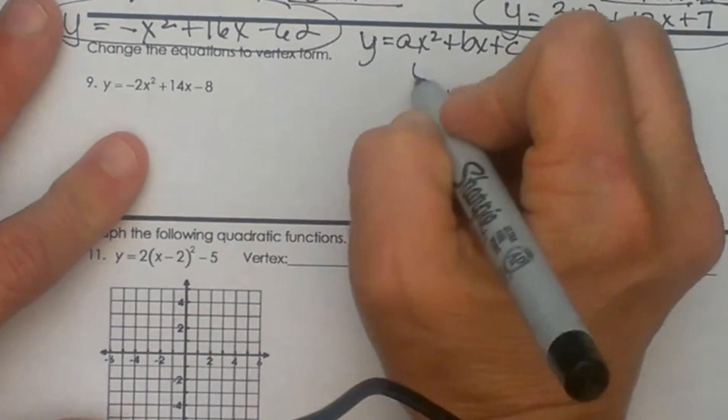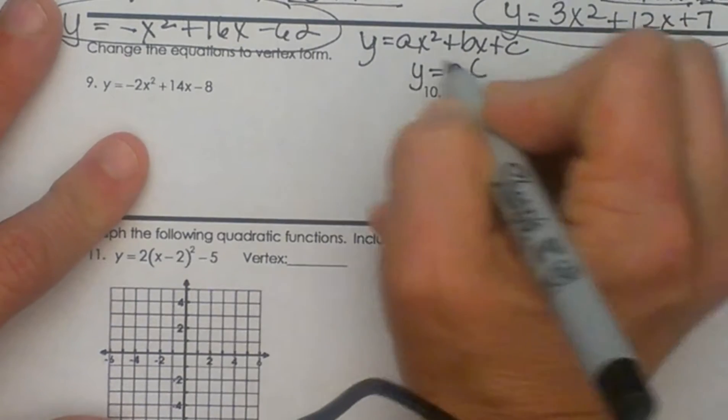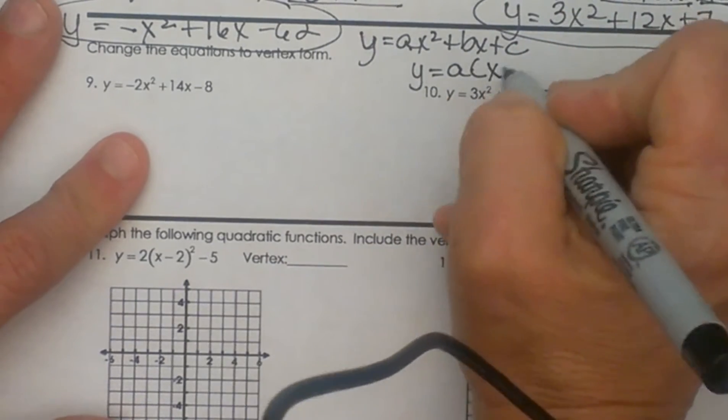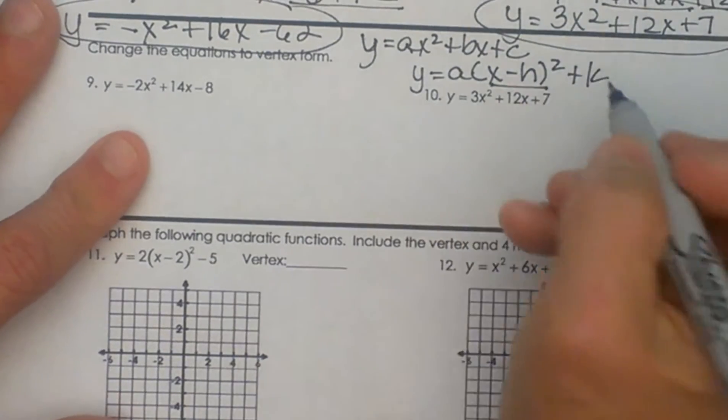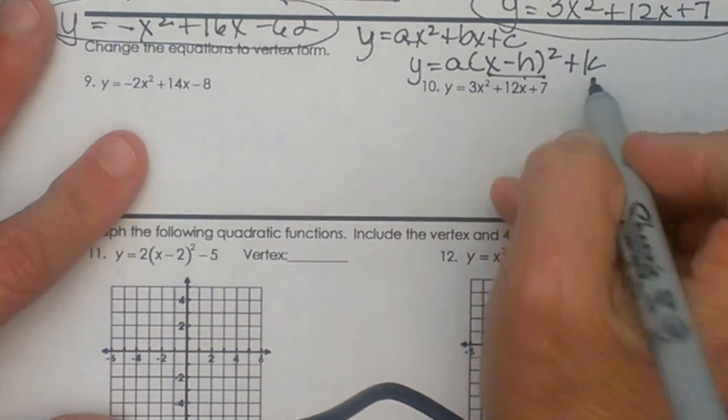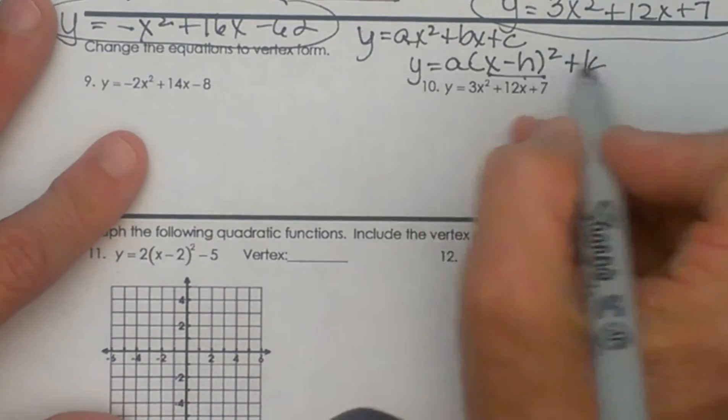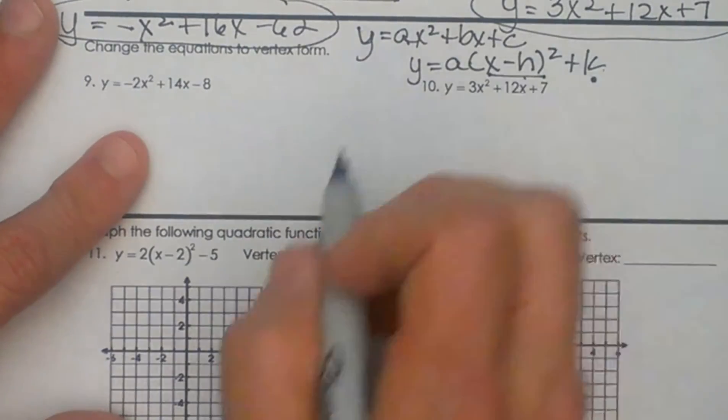Vertex form is y equals a times x minus h quantity squared plus k. So I have a perfect square in here where h and k is the vertex of my parabola, and that is why it is called vertex form because I can actually identify my vertex from it.